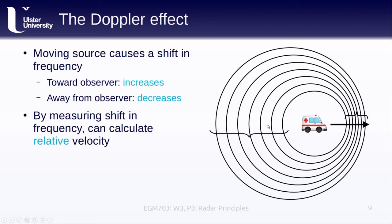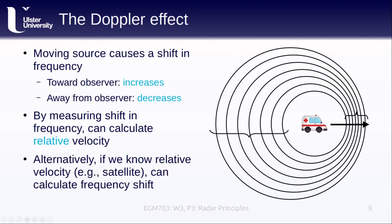If we know the original frequency we can calculate the velocity of the source relative to the observer based on the observed frequency. This is the principle behind things like the radar guns that are used to measure vehicle speeds on the road. Alternatively if we know the relative velocity of the source, for example a satellite, we can calculate the shift in the frequency which also helps us determine where on the ground a signal was returned from. And we'll come back to this in the next lesson.